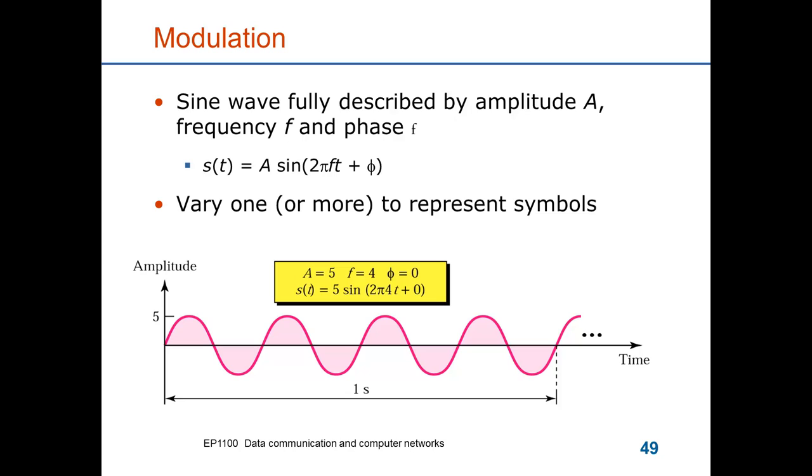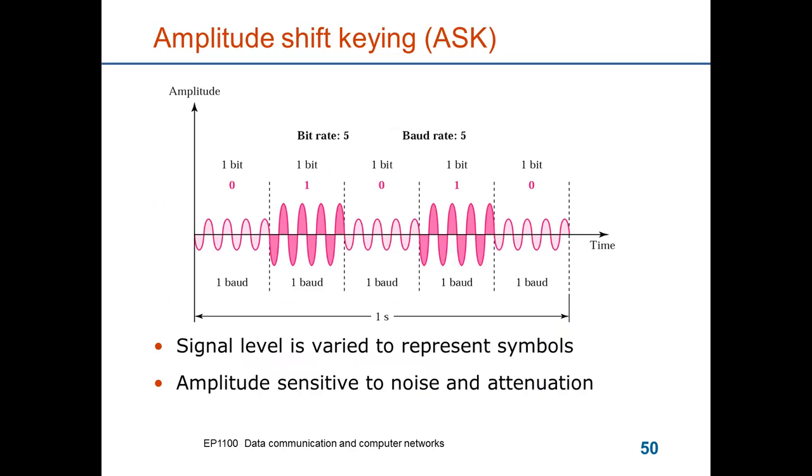Here we show amplitude shift keying, ASK. It uses two amplitudes, a lower and a higher one. You see in the first interval that a zero is represented by a low amplitude, and then in the second interval a one is represented by a higher amplitude. This type of encoding is sensitive to attenuation because the amplitude will tend to zero, and of course it's also subjected to noise that will be added to the signal. So that it can be difficult to detect whether the received signal is low or high in amplitude.